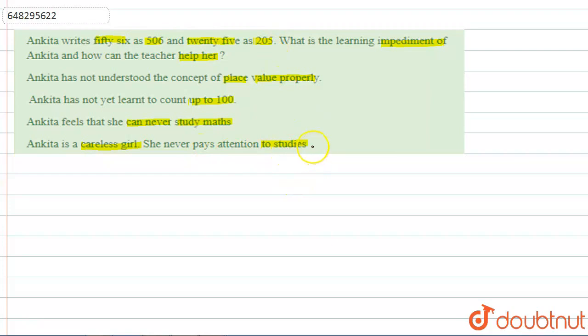She never pays attention to studies—if she doesn't pay attention, she wouldn't even know the numbers. But she knows 56, she knows the numbers. That's why we can't consider this point.